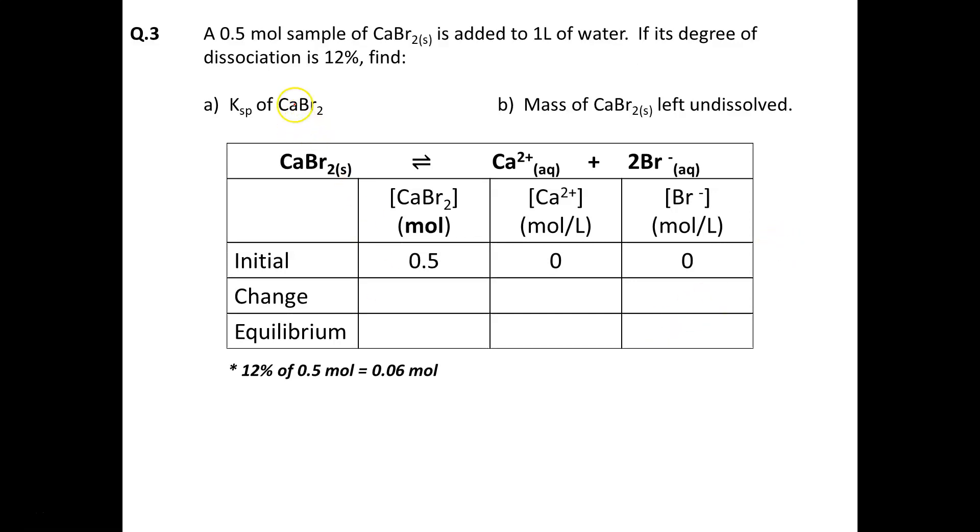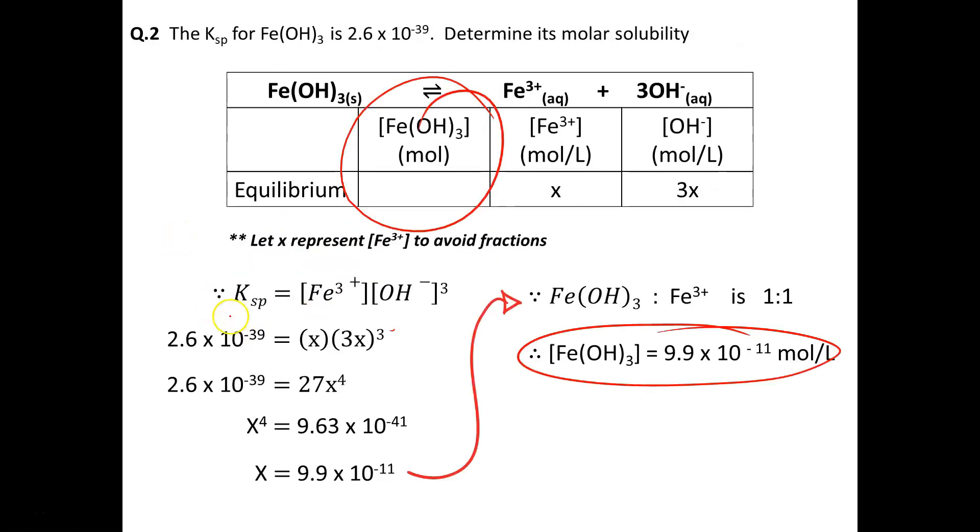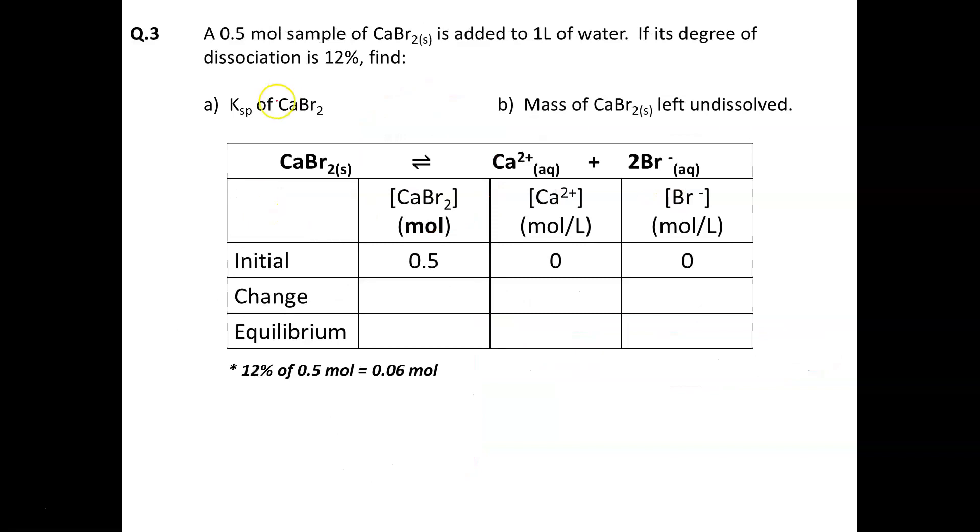The difference between this question and the previous ones, the reason this one requires an ICE chart, is because the previous one refers to molar solubility—what happens at equilibrium when the dissolution process is over. Whereas this question gives you initial values: 0.5 moles dumped into 1 liter. It's not telling you what's happened at equilibrium, it's telling you what's initially occurring. It says the degree of dissociation is 12%, meaning only 12% of the 0.5 mole sample will break up. So you have information about your change. This tells me I need an ICE chart.